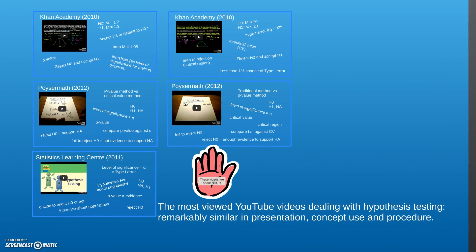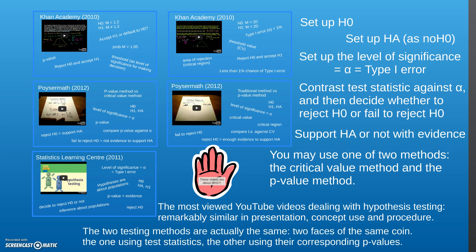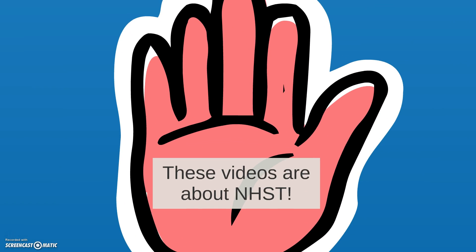When we look into these videos, we see that they are quite remarkably similar in presentation, concept use, and procedure. So basically, why are we talking about two different methods when they are essentially the same? It's like if somebody asks you for a dollar — it doesn't matter if you present it face up or face down, it is the same dollar. This is what is happening with these videos, because these videos are about null hypothesis significance testing overall.